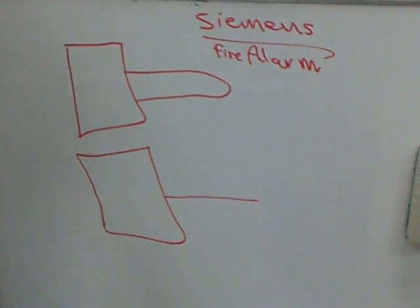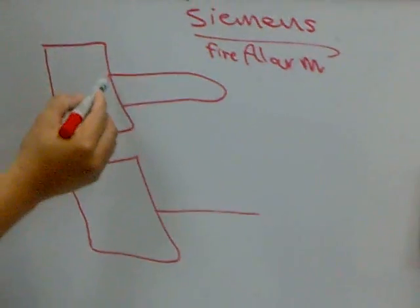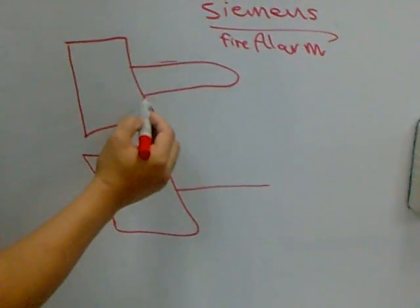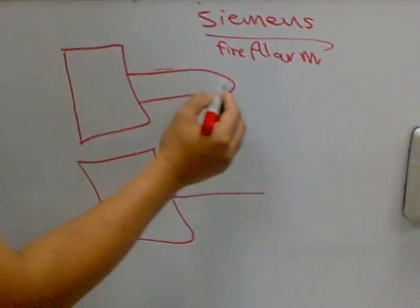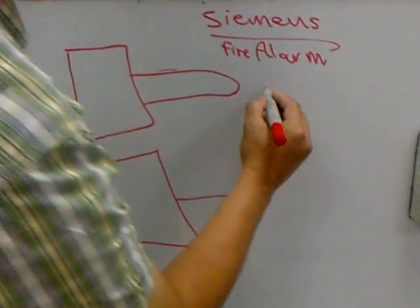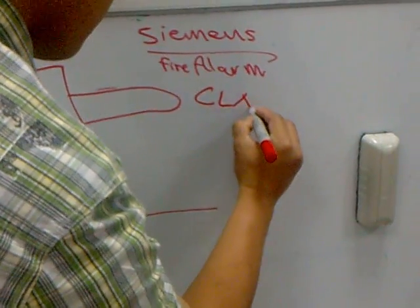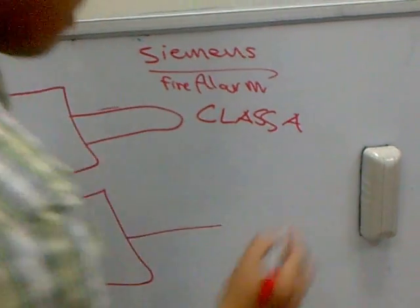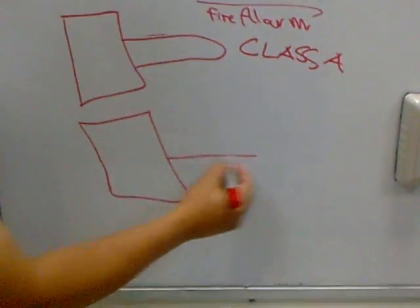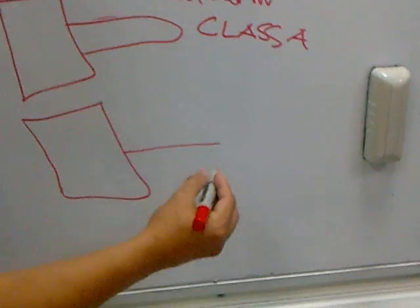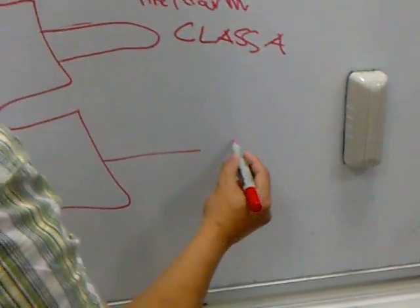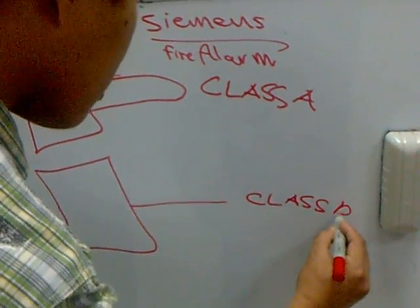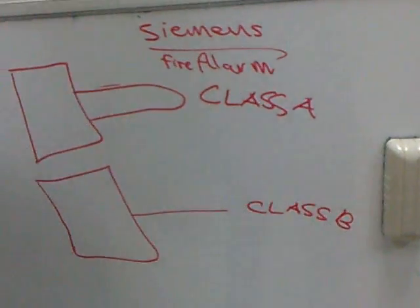Now we go to the loop. As we see, a closed loop means this is Class A wiring. And for this one with only one end, this is Class B — Class B wiring.